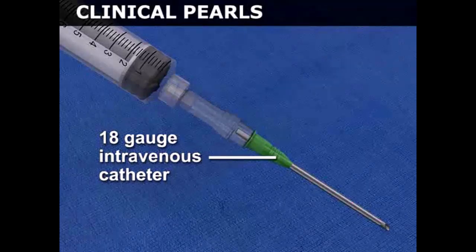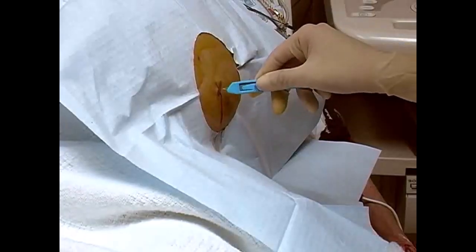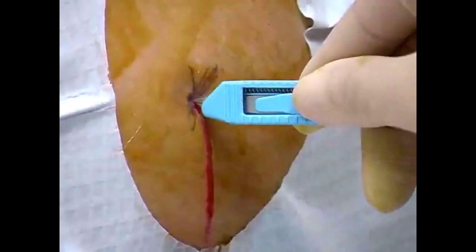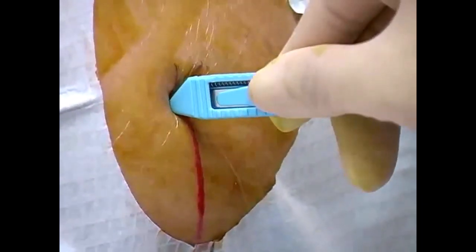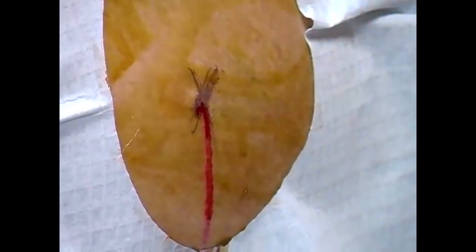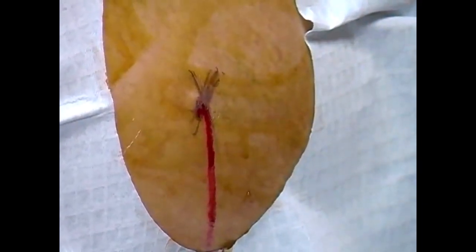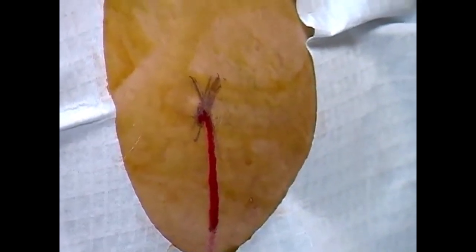Use an 11-blade scalpel or a 16-gauge needle to place a small nick in the skin, which will allow for easy passage of the catheter assembly through the epidermis.